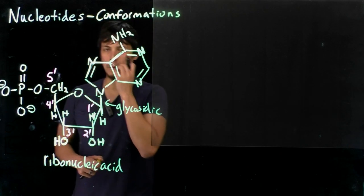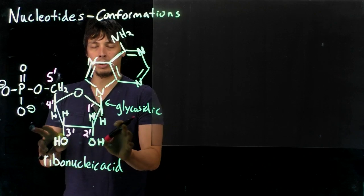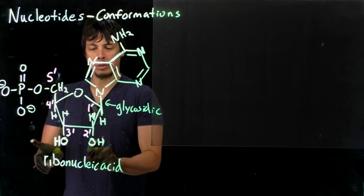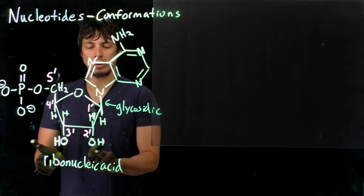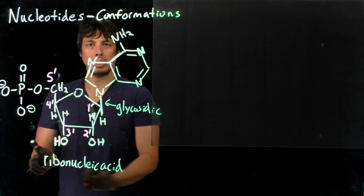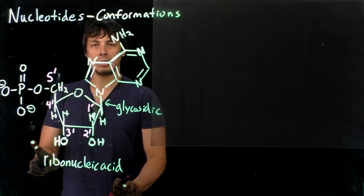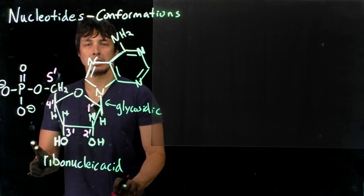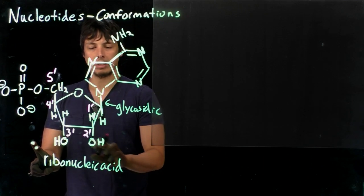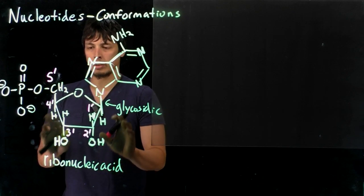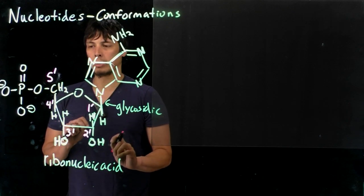So for this nucleotide we see that the OH group is still on the 2 prime position, so we know that we have a ribonucleic acid. We can differentiate that from, for instance, a 2-deoxy ribonucleic acid where the OH group would be gone.